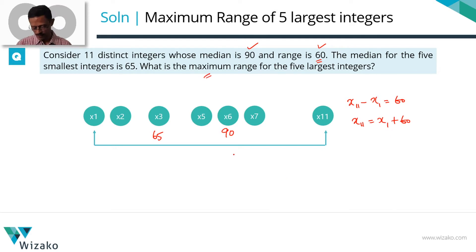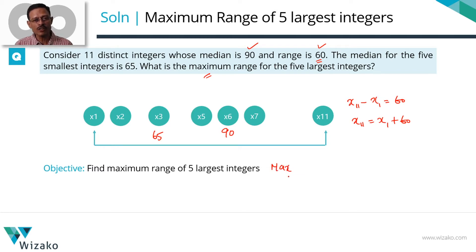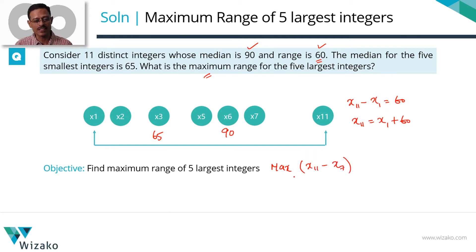What is the objective? We need to find out the maximum range for the five largest integers, which are x7 to x11. We need to maximize that range. The range for the five largest numbers would be the difference between the largest and the smallest of these numbers, so the range would be x11 minus x7. Our objective is to maximize this range — essentially, increase this gap to as wide as possible. Find the maximum gap between x7 and x11.